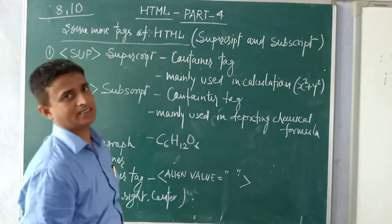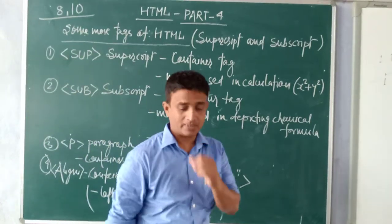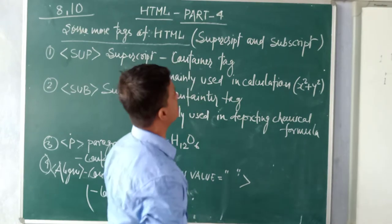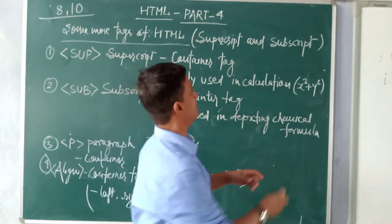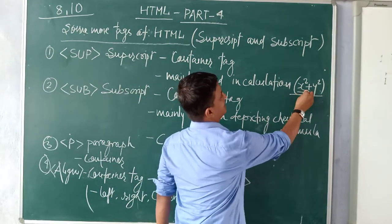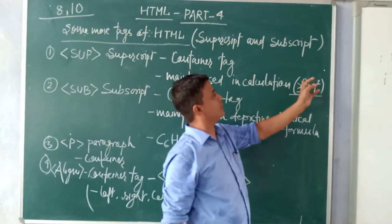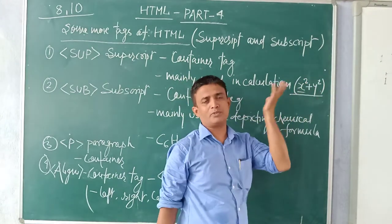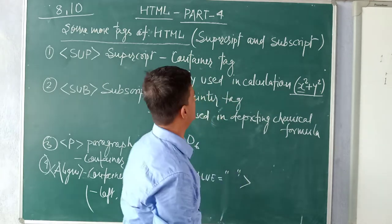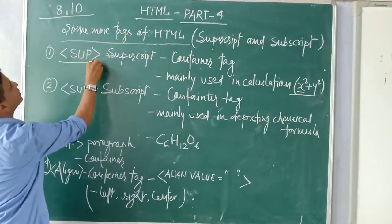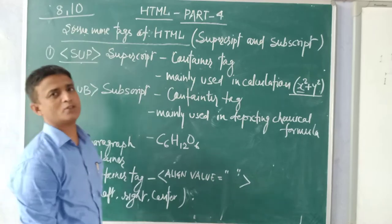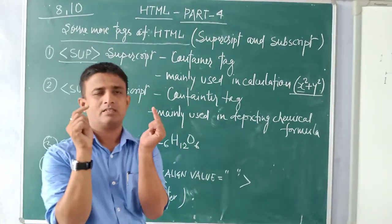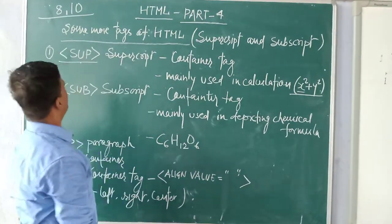It is called superscript. Superscript you already know means x square. This is x square. What is 2? 2 is here superscript. Then plus y square. Suppose you want to write on your web page, for that purpose you will use this tag sup under angled bracket.